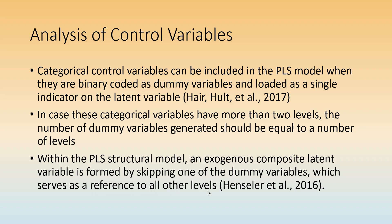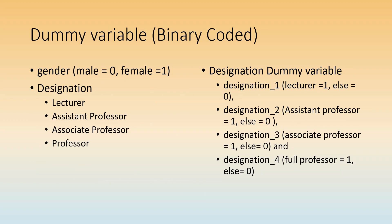For gender, if we have already coded it such that one level is zero and the other is one, it becomes a dummy variable. If we have more than two values within a categorical control variable, we need to create the same number of dummy variables as the number of levels. For example, the first dummy variable I name designation one — lecturer is one, all others zero. The second dummy variable — assistant professor is one, all others zero. The third — associate professor is one, all others zero. The fourth — full professor is one, all others zero.